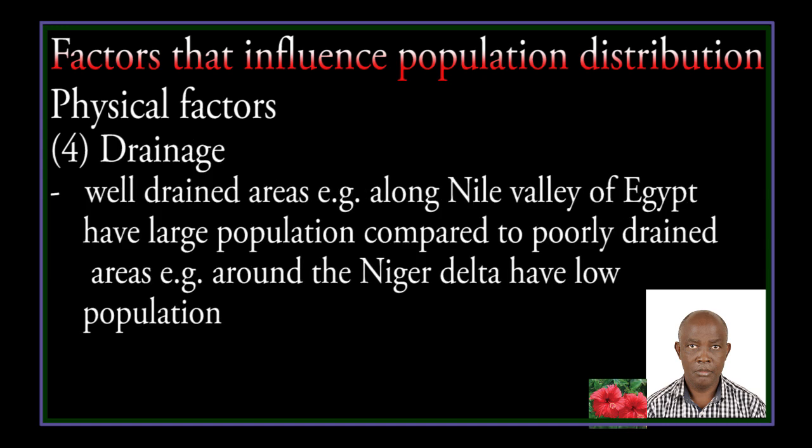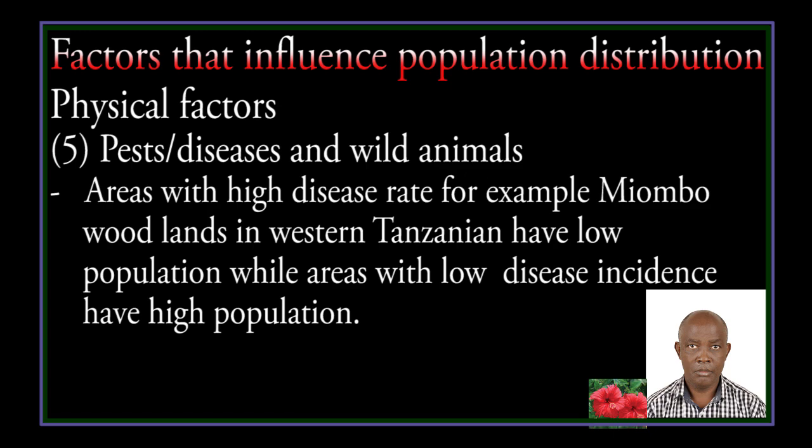Drainage: well-drained areas, for example along the Nile Valley of Egypt, have a large population compared to poorly drained areas — for example, around the Niger Delta, which has low population. Pests, diseases and wild animals: areas with high disease rates, for example Miombo Woodlands in Western Tanzania, have low population.